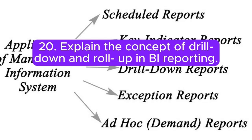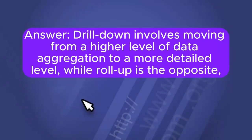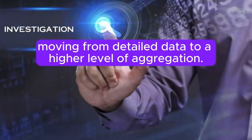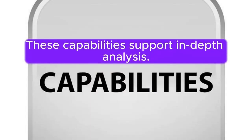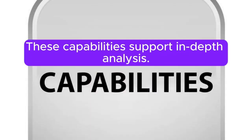Question 20: Explain the concept of drill-down and roll-up in BI reporting. Answer: Drill-down involves moving from a higher level of data aggregation to a more detailed level, while roll-up is the opposite — moving from detailed data to a higher level of aggregation. These capabilities support in-depth analysis.